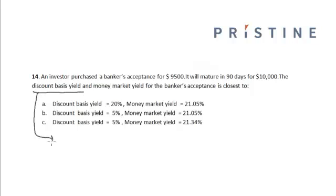The discount basis yield is calculated as face value minus price divided by the face value, times 360 divided by the number of days in which the banker's acceptance will mature.